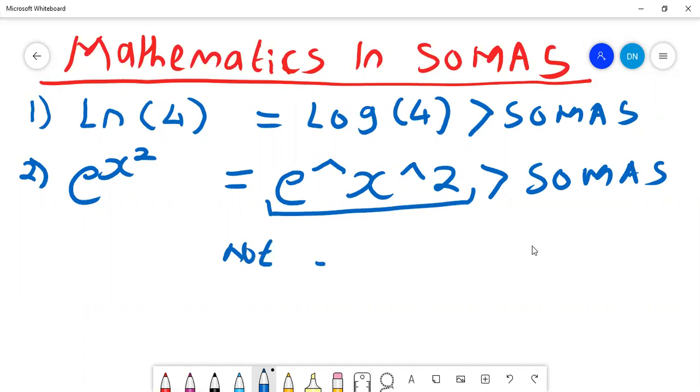Some of us are trying to write it this way, and it will not give me the original equation. So we need to be careful how we are writing down some equations in SOMAS. This will give me e to power x over 2, not e to power x squared.